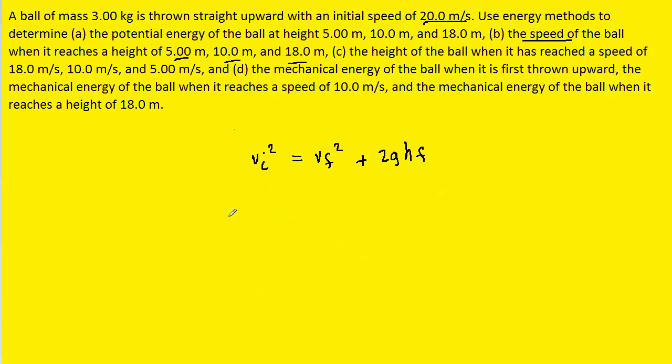We can then subtract v final squared from both sides. And then finally, we can divide both sides by 2g so that it cancels out on the right-hand side.